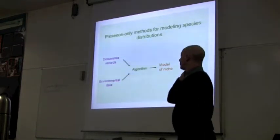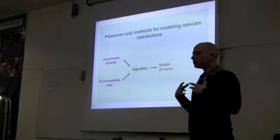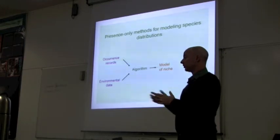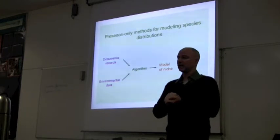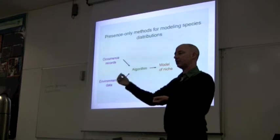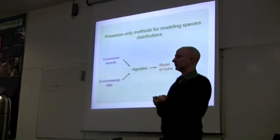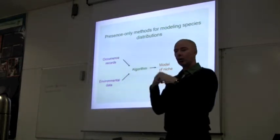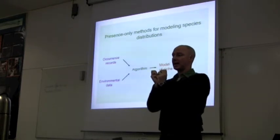We have two kinds of data, we have occurrence records, and we have environmental data. Those are somehow entered into an algorithm, and there are many available, which I'm sure you guys have seen lots of these. And somehow a model of the species niche is made. So, is this model in geographic space or environmental space at this stage? Environmental space. We've taken our data from geographic space. We're working in ecological or environmental space, and that's our model right now.